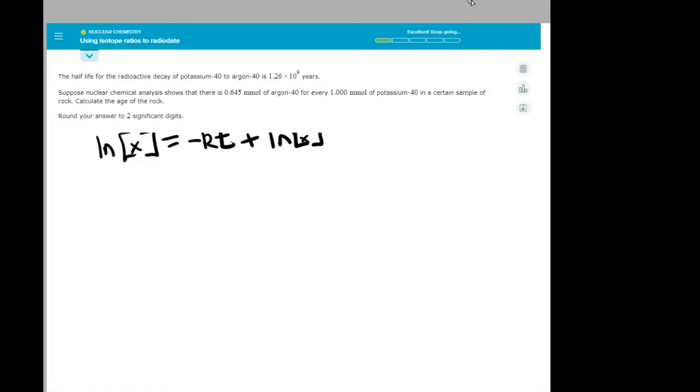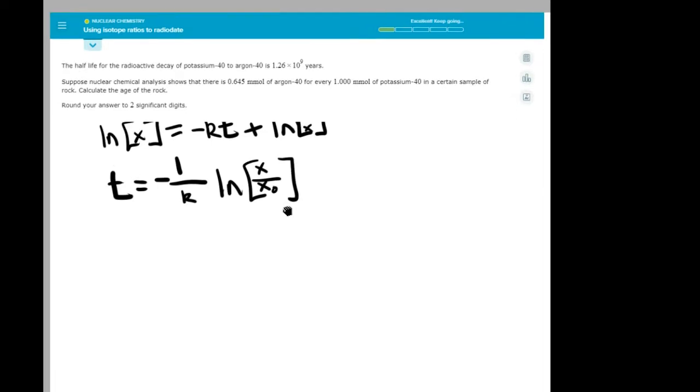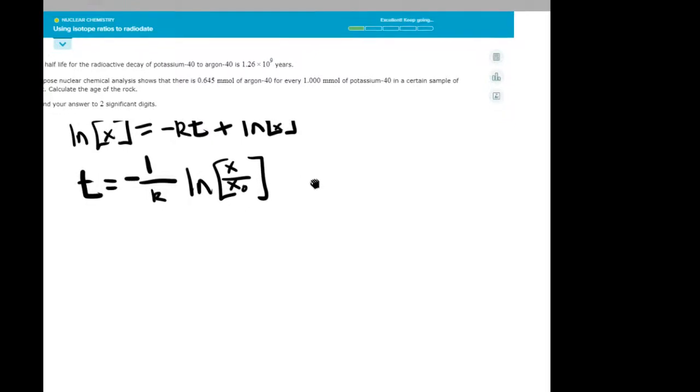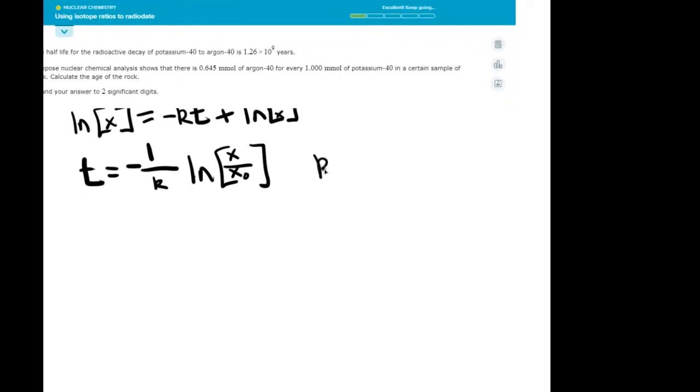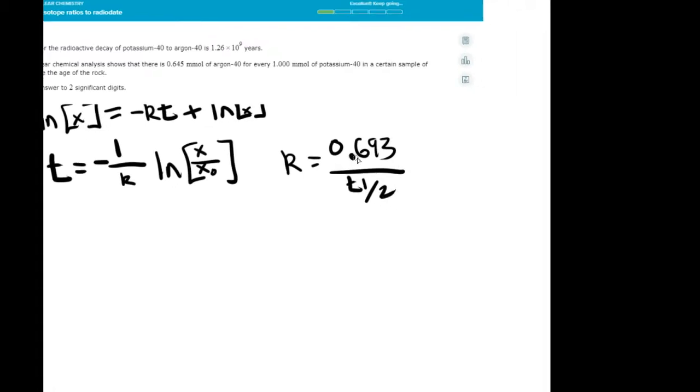Since we're looking for the age of the rock, which is T, we would do this equation instead: T equals negative 1 over the K constant times ln(X initial over X final). Additionally, we would need the K constant equation, which is 0.693 over the half-life. The 693 is from because this is originally ln(2), and that equals this, so we just remember that number.